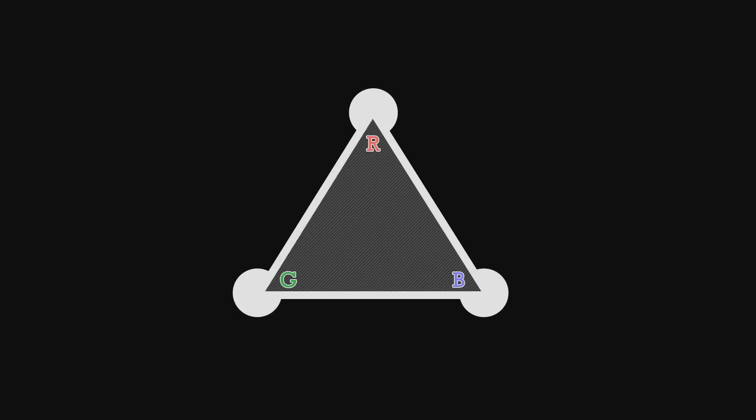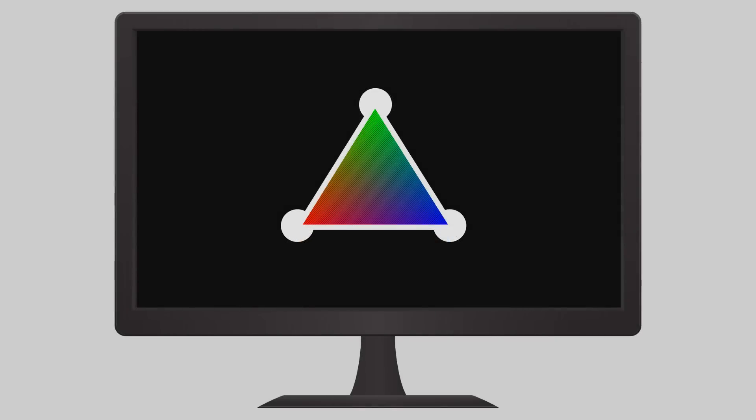Then it goes through a step called fragment processing, where it takes things like textures, alpha, depth, and lighting into consideration to make colors for your face so it looks more realistic. It then applies this data to the rasterized image and outputs the data as pixels on your monitor. So that's how the two different engines work — but what is the difference between them, and what pros and cons do they each have?